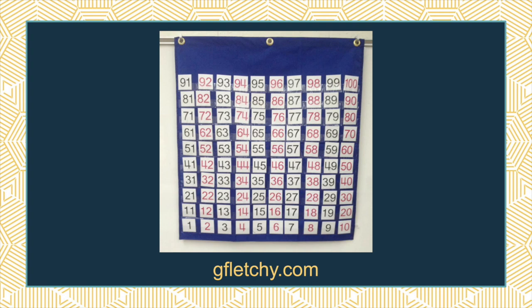Graham Fletcher suggests moving to a 'bottoms up' hundreds chart — you start at the bottom and move up the chart. You can still see all those patterns, but as kids add by multiples of 10, those hops go up the chart. For 27 plus 20, the hops of 10 are now going upward, which conceptually feels better to young kids. And if subtracting, they'd go down — that just feels right. When you switch your hundreds chart this way, kids love it.